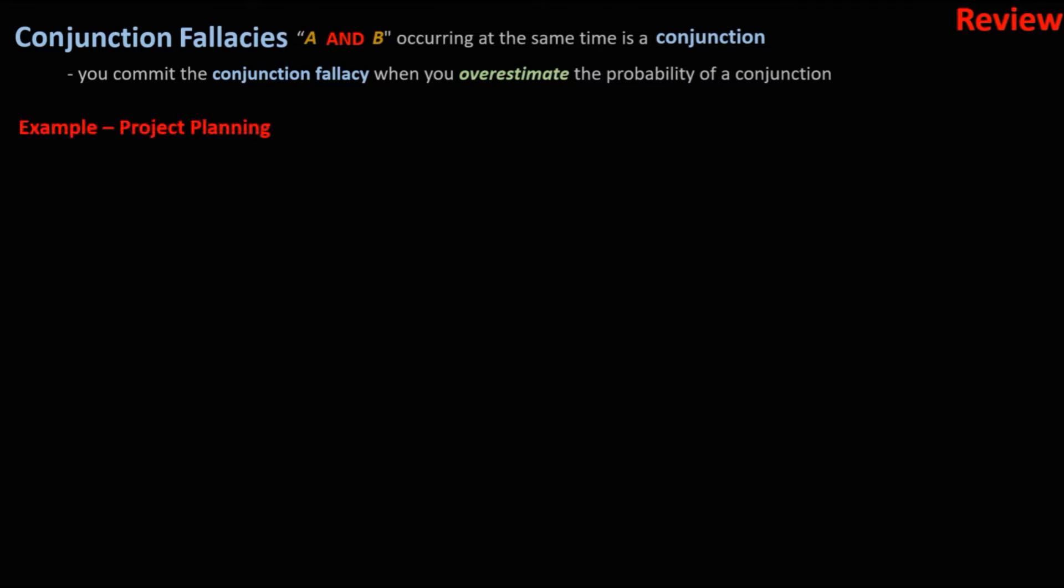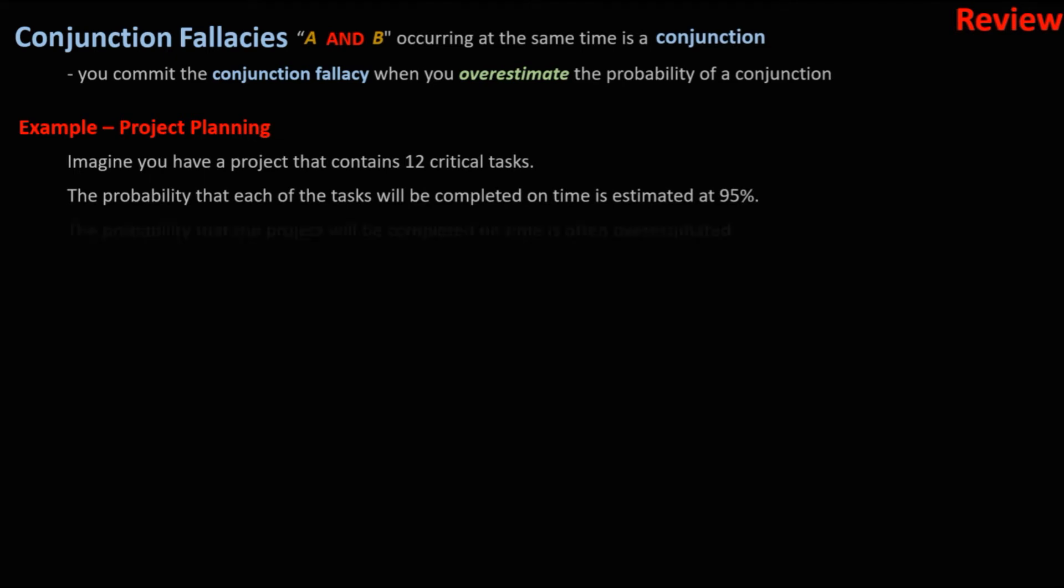A common example is project planning. Imagine you have a project that contains 12 critical tasks. The probability of each of these tasks coming in on time is 95% or 0.95.